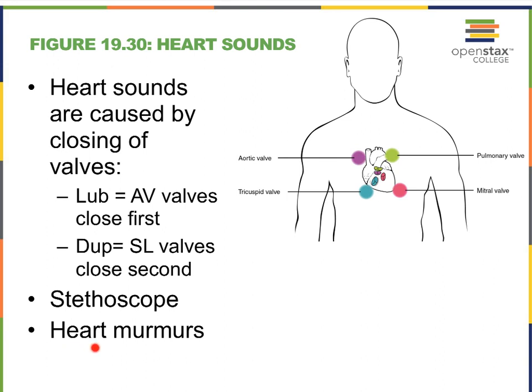Heart murmurs are often said to be created due to problems with valves, and there's some truth to that, but most heart murmurs are actually created due to the sloshing around of blood inside of the heart. The anatomy on the inside of the heart tends to change somewhat as we get older, and it's somewhat different in young children — which may lead to some of these heart murmurs.